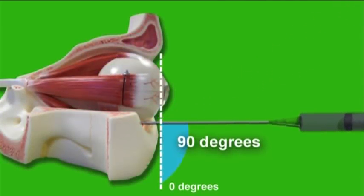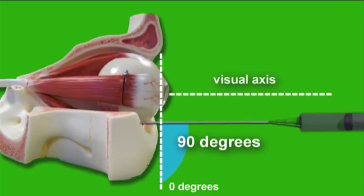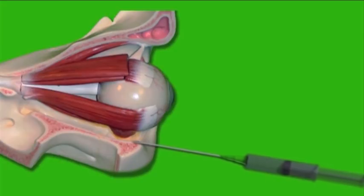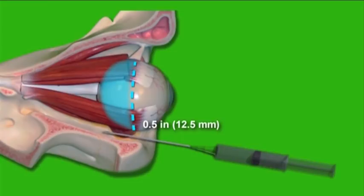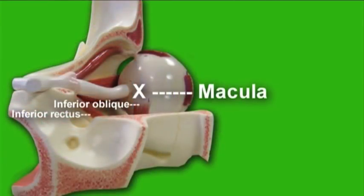Stage 2. The needle tip is redirected at a 90-degree angle to the frontal plane of the orbit, parallel to the visual axis. Then the needle is advanced posteriorly approximately 0.5 inches or 12.5 millimeters, passing the equatorial plane of the globe. During this stage, the tip of the needle continues in the extraconal peribulbar space. At this point in Stage 2, we observe that the globe remains superior and, as the needle tip passes its equatorial plane, the curvature of the globe is no longer posterior to the needle tip. The macula remains medial to the needle tip throughout the procedure, along with the area inferior to the macula where a staphyloma may form.